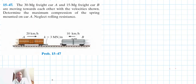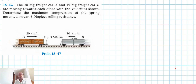Welcome. The problem reads: a 30 megagram flat car A and 15 megagram flat car B are moving towards each other with the velocity shown. Determine the maximum compression of the spring mounted on car A. Neglect rolling resistance. This problem is from Engineering Mechanics and Dynamics, 14th edition by Hibbeler.